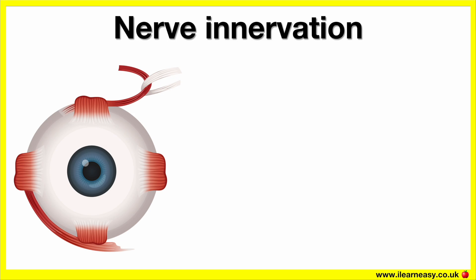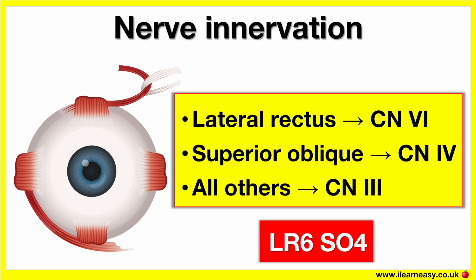The easiest way to remember the innervation (nerve supply) is LR6SO4. The lateral rectus is innervated by the sixth cranial nerve, the abducens. The superior oblique is innervated by the fourth cranial nerve, the trochlear nerve. All the other muscles are innervated by the third cranial nerve, the oculomotor nerve.